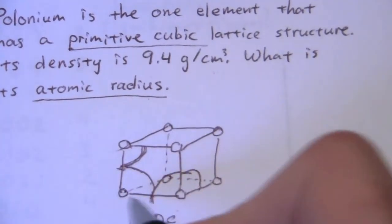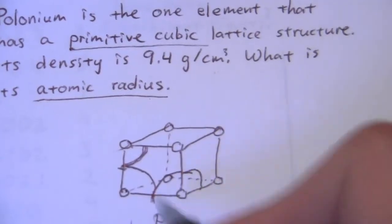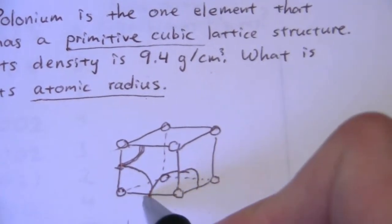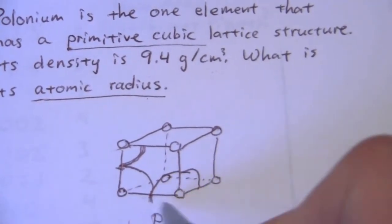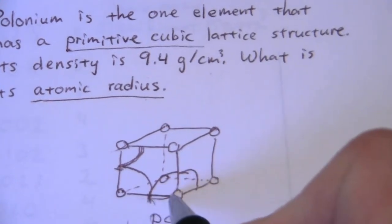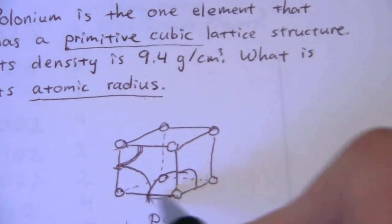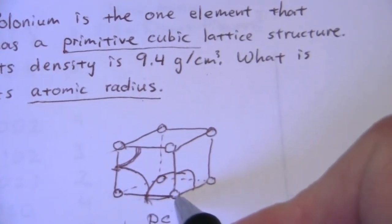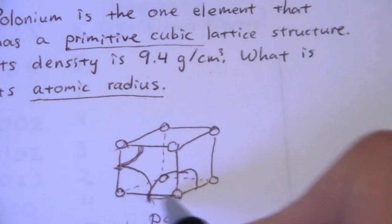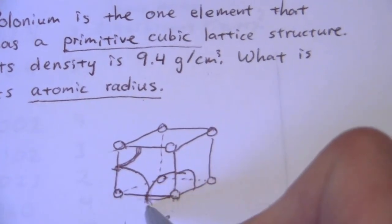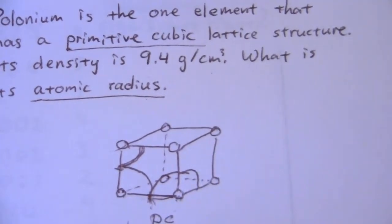So in other words, if we have the dimensions of the unit cell, that's what this cube is that I've drawn. If we have the dimensions of this unit cell, that will, in a straightforward way, give us the radius of the polonium atoms. Because this is just the diameter of one atom. You divide that into two parts, and that gives you the radius.